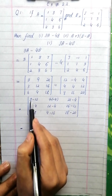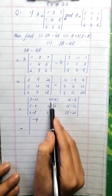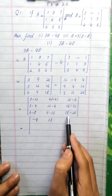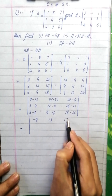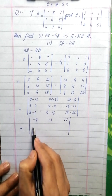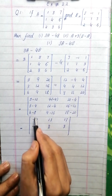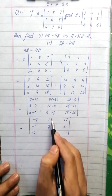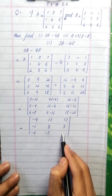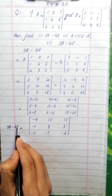3 minus 12 = minus 9. Yahan par minus into minus plus hoga, to 9 plus 4 = 13. 21 minus 4 = 17. 3 minus 4 = minus 1. 12 minus 4 = 8. 15 minus 12 = 3. 6 minus 8 = minus 2. 9 minus 16 = minus 7. 18 minus 20 = minus 2. Yahi hamaare paas 3A minus 4B ka answer hai.